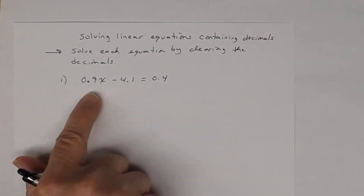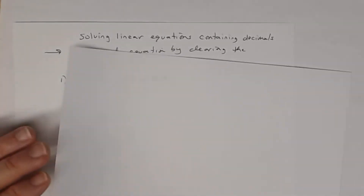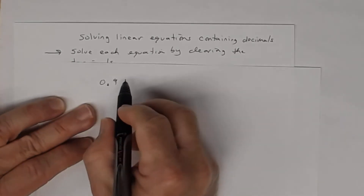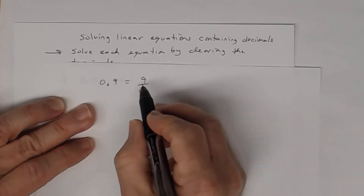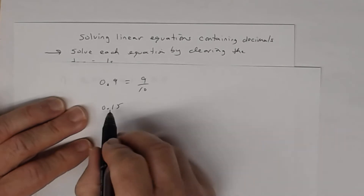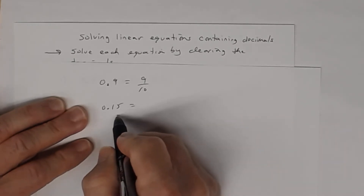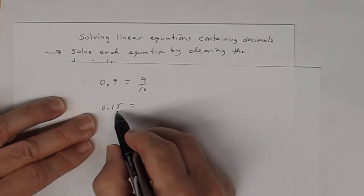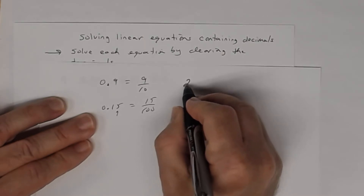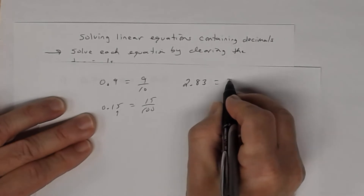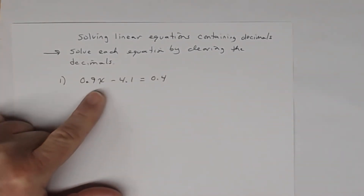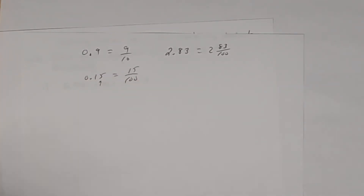Think about 0.9: it's really 9 tenths, the fraction 9/10. Similarly, 0.15 is read as 15 hundredths, and 2.83 is read as 2 and 83 hundredths. So when working on problems with decimals, think: what are they as fractions?